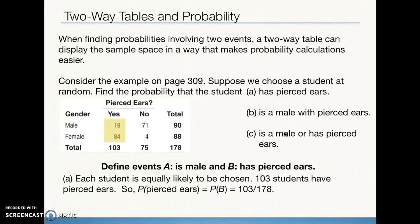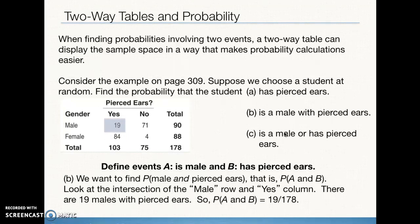We divide 103 by the grand total of 178. We can show this probability in decimal form, fraction form, or percent form. For question B, we want the probability of a randomly selected student being male and having pierced ears. We go to the intersection of the male row and the pierced ear column — 19 students fit that category. Out of 178, that gives us the probability of being a male with pierced ears.